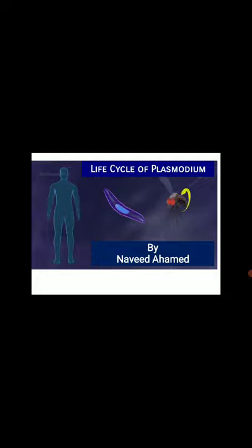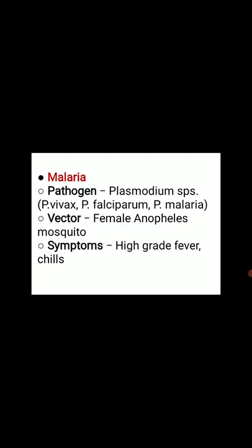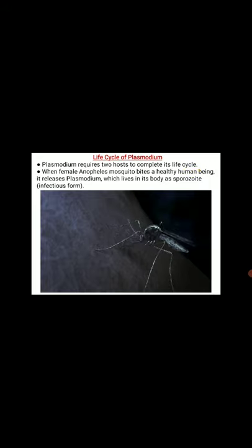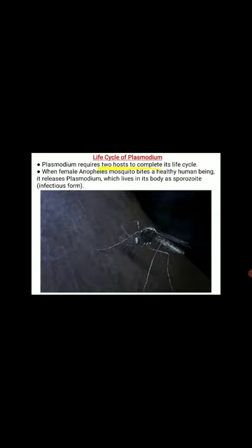It is a diagenic parasite, requiring both human and mosquito for the completion of its life cycle. There are three important species responsible for causing malaria. The female Anopheles mosquito acts as a vector in transmitting malaria, and symptoms include high-grade fever and chills. Plasmodium requires two hosts — man and mosquito — to complete its life cycle.